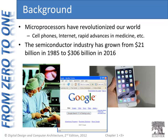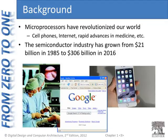They've really revolutionized our world, particularly microprocessors, which are in the later parts of the book. We won't get to those this semester, but in future classes — CP200 and CP300 — we'll talk about the implications of microprocessors. In this course, we're going to discuss the fundamentals of digital design that lay the groundwork for all digital design, including microprocessors. The semiconductor industry has grown from $21 billion in 1985 to $306 billion in 2016, and it's still growing today.